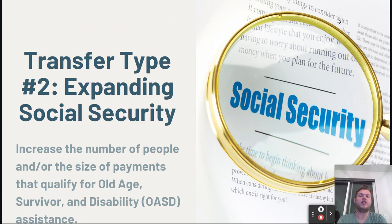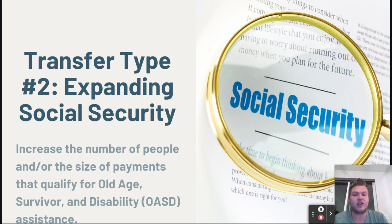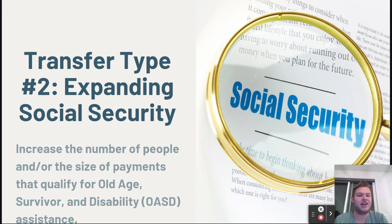The next area is expanding social security, which has the potential to be the biggest part of this topic. If this topic becomes unmanageable, I theorize it will be because of this area. Expanding social security according to the more limited interpretation would mean increasing the number of people and/or the size of payments to people who qualify for old age, survivor, and disability — or OASD — assistance. But social security more generally or internationally is any government program meant to provide a social safety net to help people economically in case of disaster or poverty, which is a very different thing.